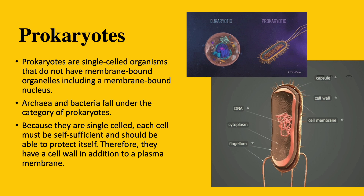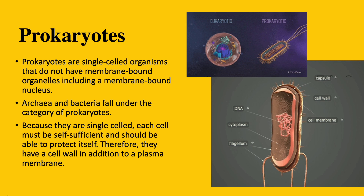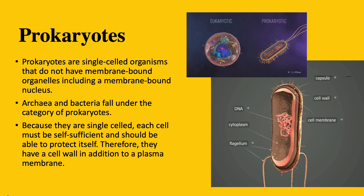Of the three overarching domains into which life is classified — archaea, bacteria, and eukarya — archaea and bacteria fall under the category of prokaryotes. Because these are single-celled organisms, each cell must be self-sufficient and able to protect itself. Therefore, prokaryotes have a cell wall in addition to the plasma membrane, which protects them from the external environment.